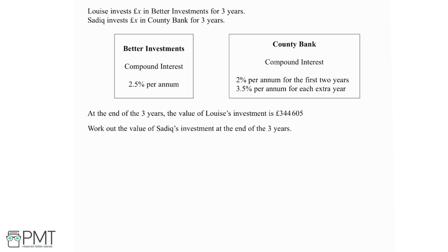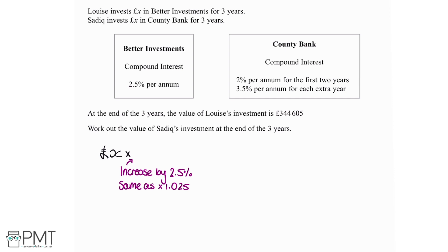Louise invested with Better Investments, so these were her terms. She invested x pounds to start off with. The interest each year is 2.5%, so the amount of money goes up by 2.5%. Increasing by 2.5% is the same as multiplying by 1.025. So multiplying by 1.025 gives the result after one year.